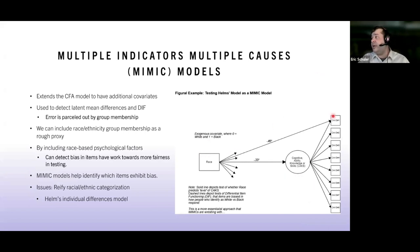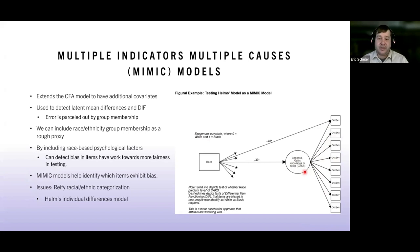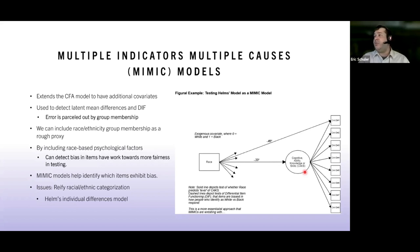Once we have good model fit, we partial out error based on group memberships and look at differential item functioning. We can use race/ethnicity group membership or other memberships as a rough proxy. If we see a line between race and our latent mean construct score, we ask: are there latent differences based on group membership, and are items showing bias against one group compared to another?